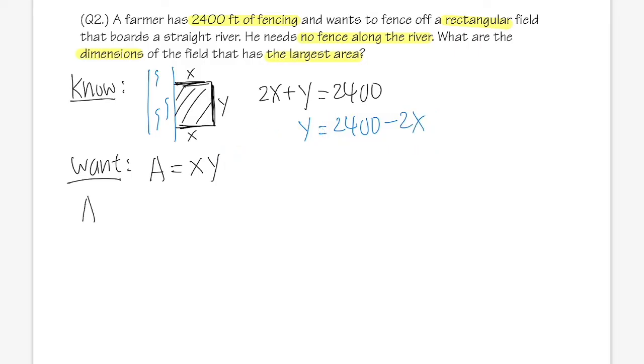So we will get A, and it will be a function of x only, and that's just x times y, which is 2400 minus 2x. And we are going to just take the derivative and make sure that it will give us a maximum, and that's pretty much it.